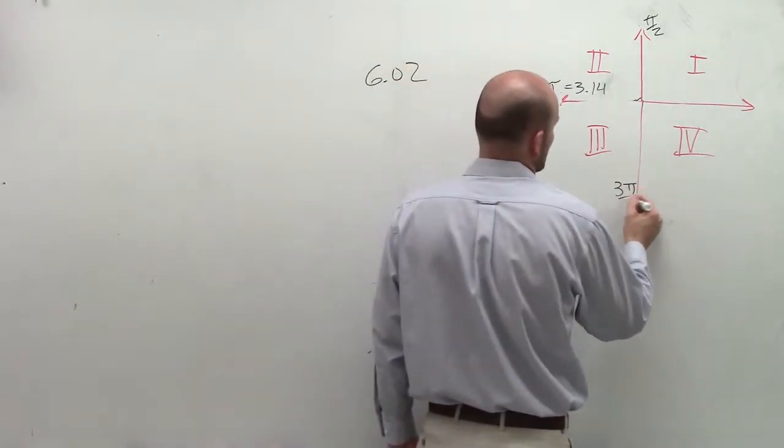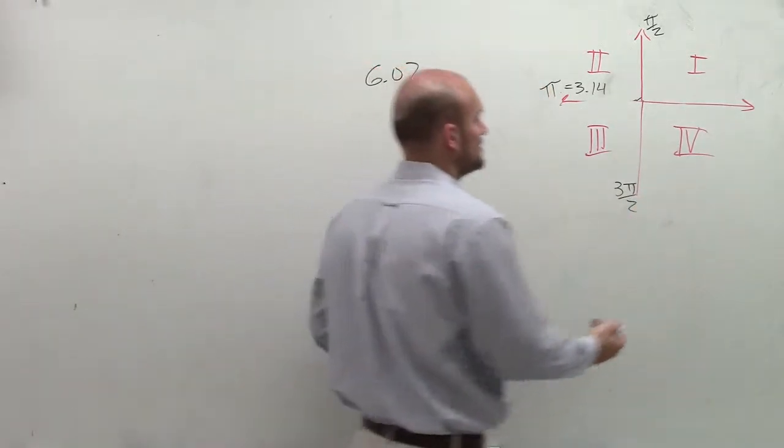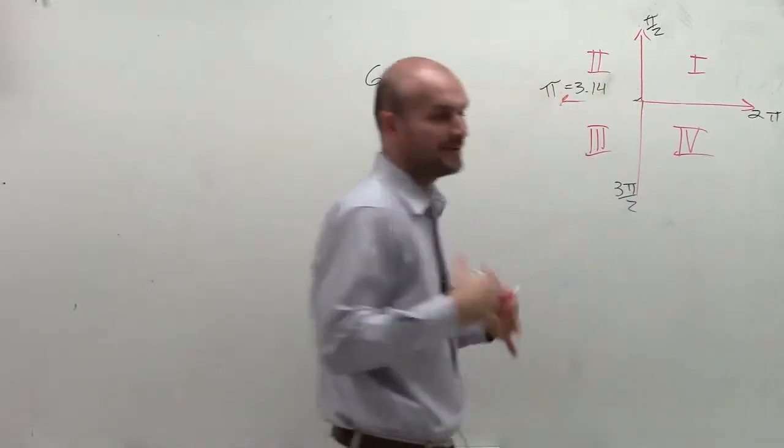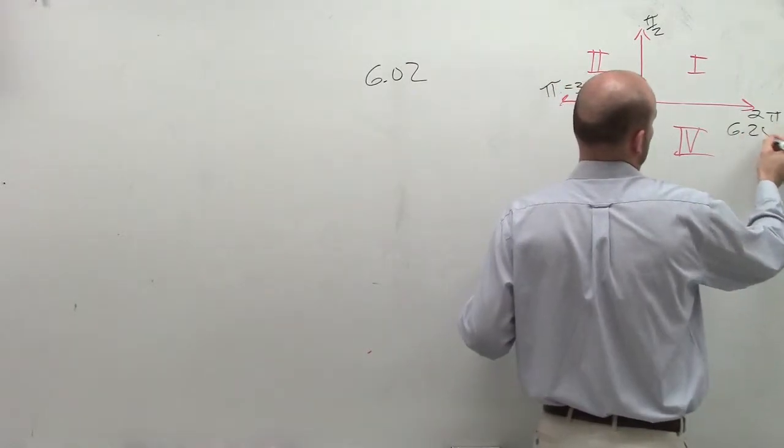Now we said here was 3 pi over 2, because I don't really need to solve all these to solve these problems. At the end is going to be 2 pi. Well, if I'm going to give a decimal approximation of that, I could do 6.28, right?